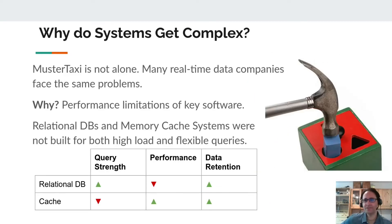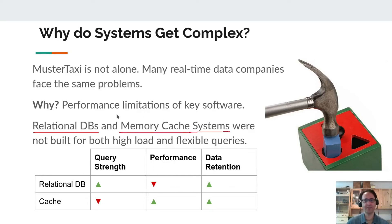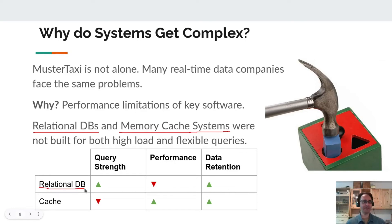So why do these systems get so complicated? MoosterTaxi is not an isolated incident — many real-time data companies face the same problem. Part of the reason is that they're working around inherent limitations of the systems they're built on. Most are built on two major types: relational databases like MSSQL, MySQL, and Postgres, and memory cache systems like Memcache, Redis, or ElastiCache. Relational databases, originally designed in the 70s and 80s, are built to keep track of highly connected data with great query flexibility. However, they pay a price for writing data to disk safely, and can suffer once performance reaches beyond a certain limit.